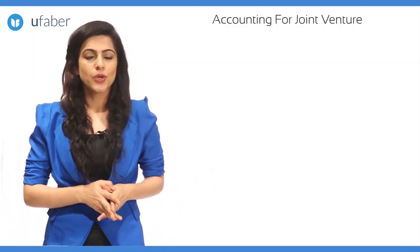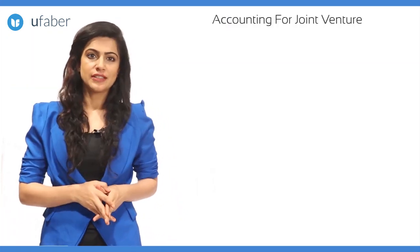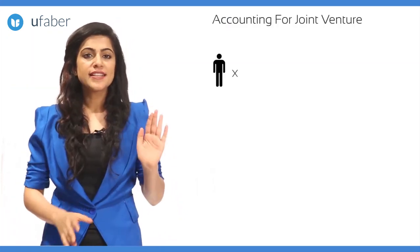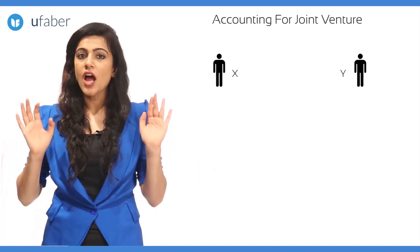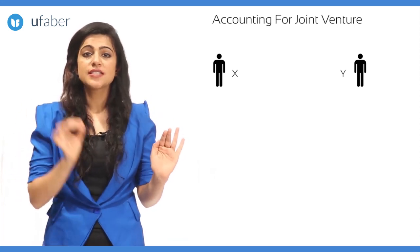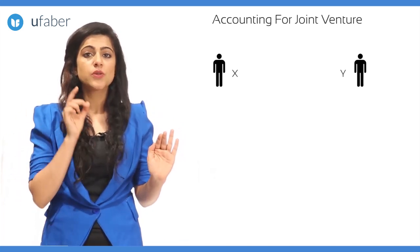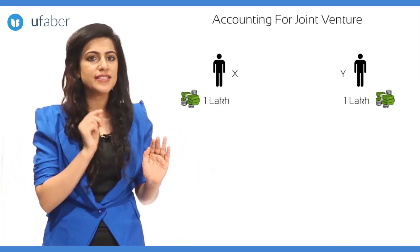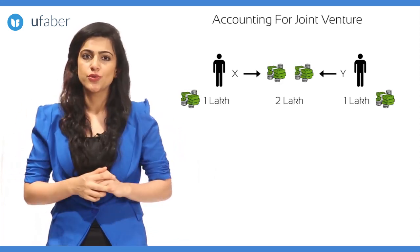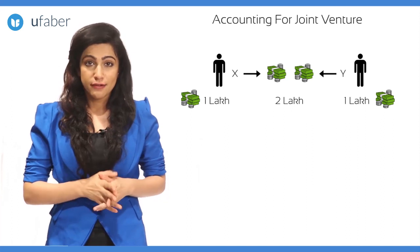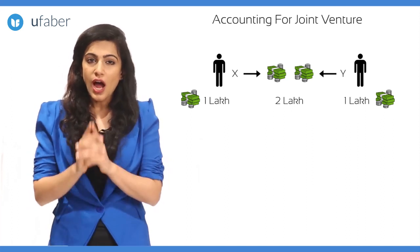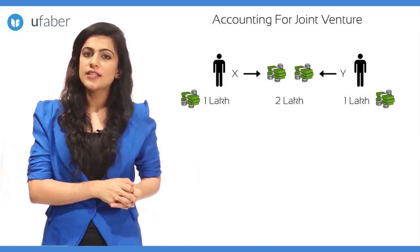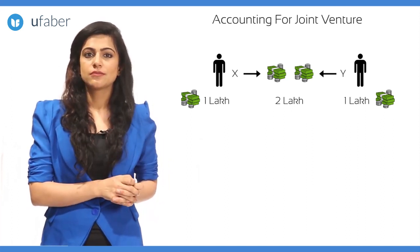Now let us see how joint venture will function. X and Y are bringing in a sum of rupees one lakh each as initial contribution. Now how do we record this transaction?